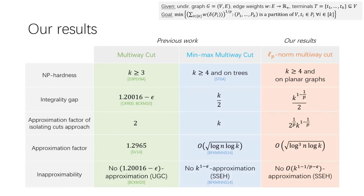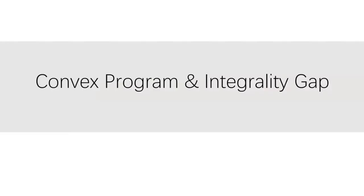When p equals one and p equals infinity, the isolating cuts approach interpolates between approximation factors of two and k respectively. In this talk I'll cover three aspects: the convex programming relaxation and integrality gap, the isolating cuts approach, and the log-squared n approximation.